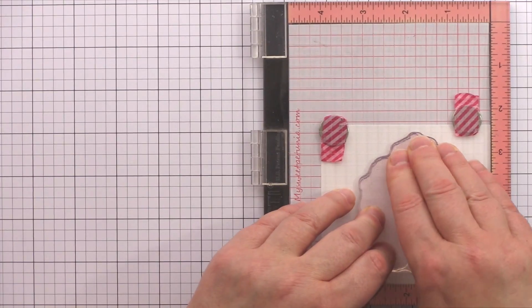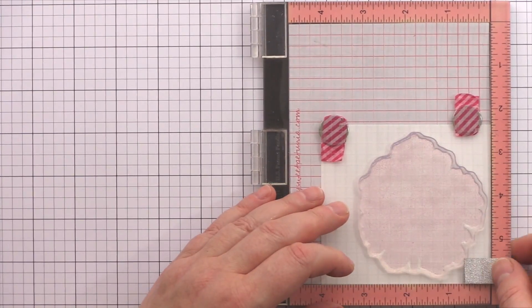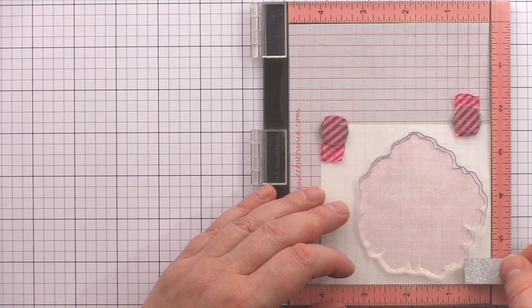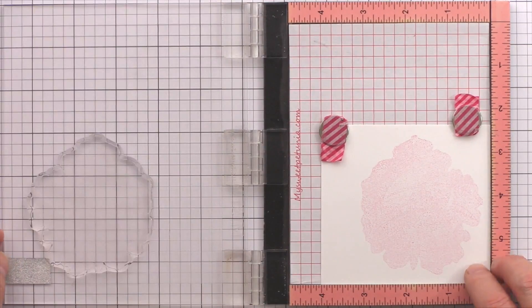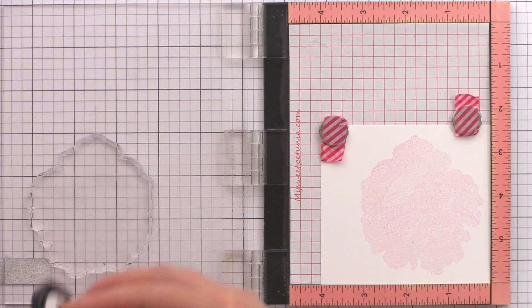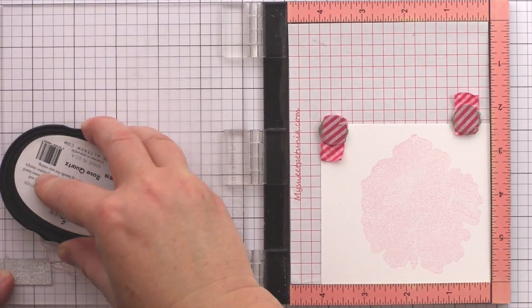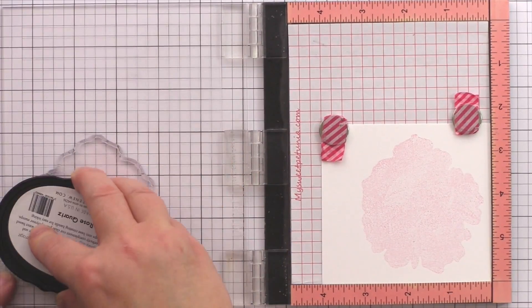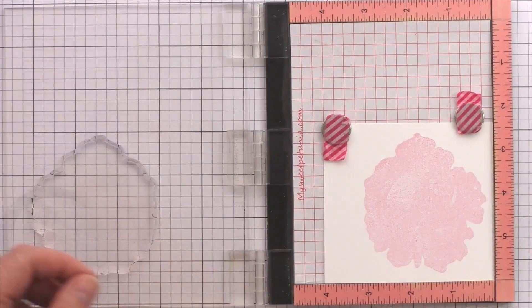I've placed a piece of Neenah Solar White card in the MISTI. I stamped the base layer for the flower in Altenew Rose Quartz ink. I stamped this layer twice to get a better, darker impression and then repeated the stamping on a couple of other pieces of card so that I would have multiples at the end.